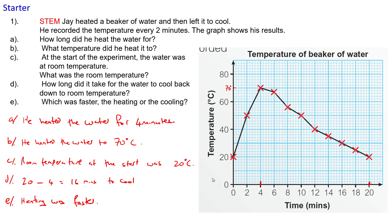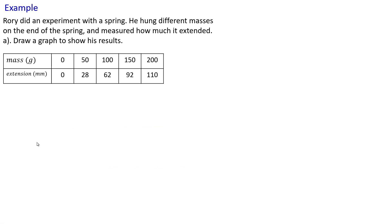Right, so moving on. Let's have a look at an example. Okay, so our example then, we're going to sketch a graph. We're going to draw a graph now. We've got Rory here. He's conducted an experiment with a spring and he's hung different masses on the end of the spring, then he's measured how much he extended, so how much did he stretch the spring with the different masses.